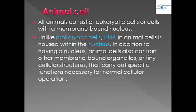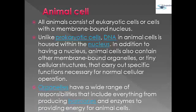Unlike prokaryotic cells, DNA in animal cells is housed within the nucleus. In addition to having a nucleus, animal cells also contain other membrane-bound organelles — tiny cellular structures that carry out specific functions necessary for normal cellular operation. Organelles have a wide range of responsibilities, including producing hormones and enzymes and providing energy for animal cells.